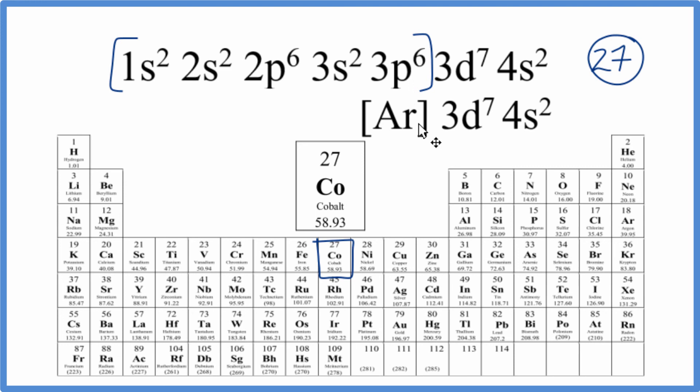So those are two ways you can figure out which element is represented by the electron configuration 1s2, 2s2, 2p6, 3s2, 3p6, 3d7, 4s2.